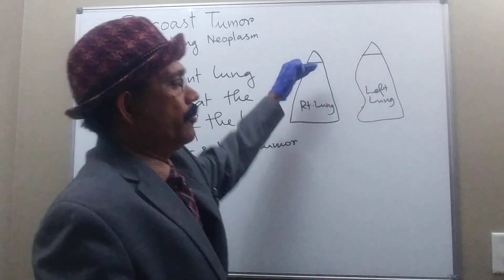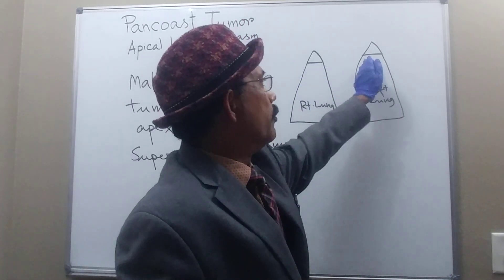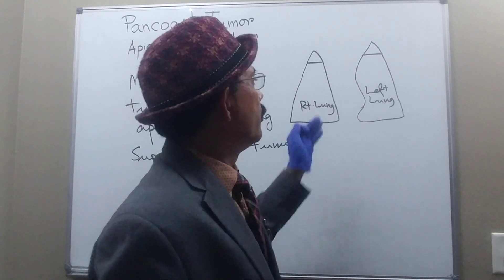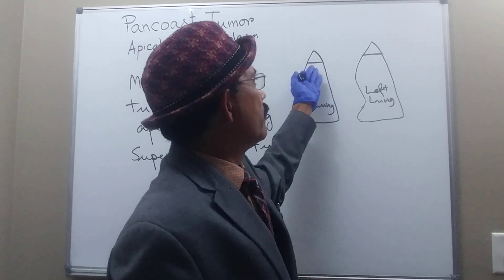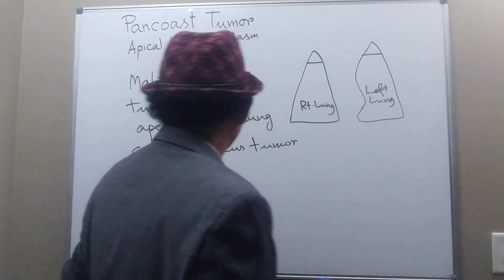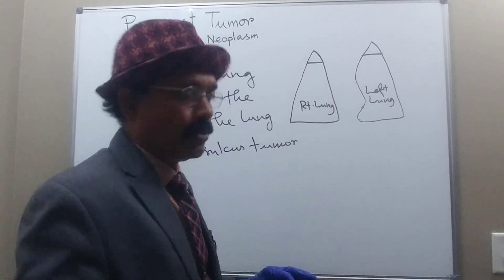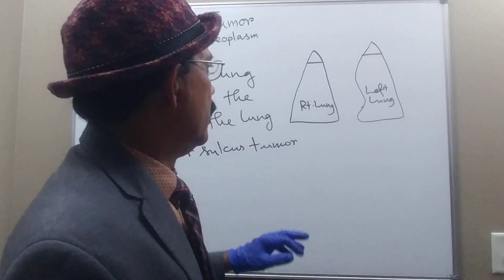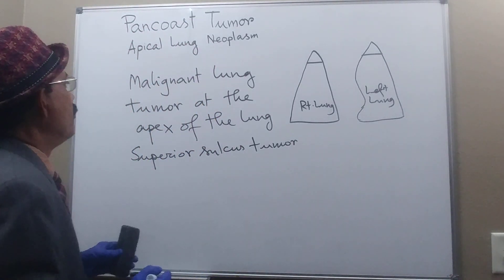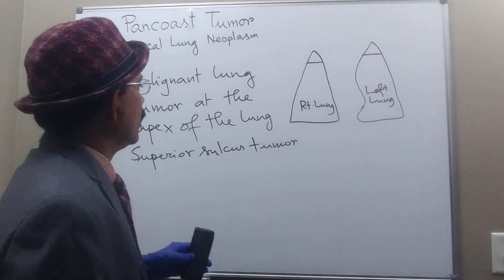It is called superior sulcus tumor because it is above the sulcus for the superior vena cava on the right lung, and above the impression for the arch of the aorta on the left lung — on the mediastinal surface. The tumors are located above those impressions. It is usually unilateral, though it may be bilateral on very rare occasions.